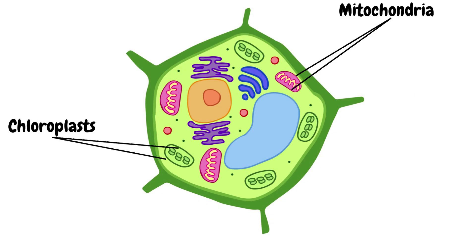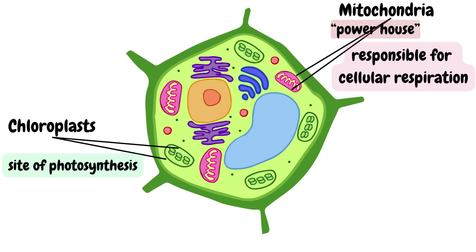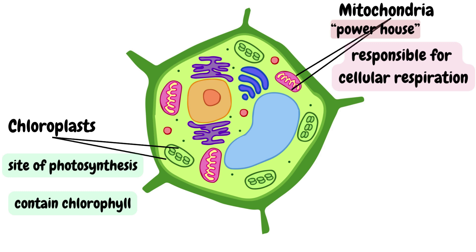Next we have mitochondria and chloroplasts. All cellular activities require energy. The primary energy converters in eukaryotic cells are the mitochondria. Mitochondria are famously known as the powerhouse of the cell and are responsible for cellular respiration, a process that converts energy from food into adenosine triphosphate, or ATP — energy that the cell can use. Mitochondria are complex organelles that have their own DNA and can make copies of themselves. Chloroplasts are found in plant cells and are the site of photosynthesis. They capture energy from sunlight and use it to convert carbon dioxide and water into sugars, manufacturing food for plants. Chloroplasts contain chlorophyll, the pigment which gives plants their green color.